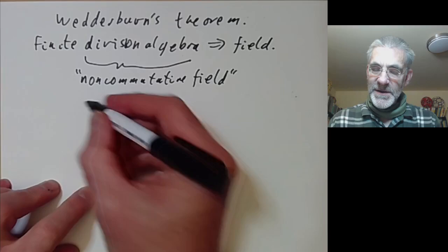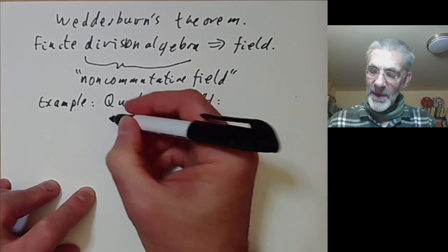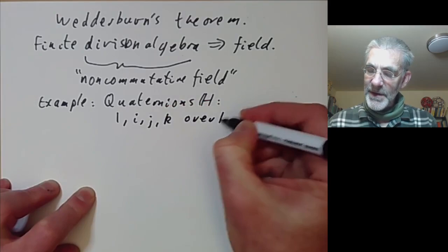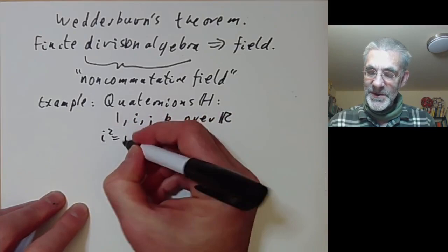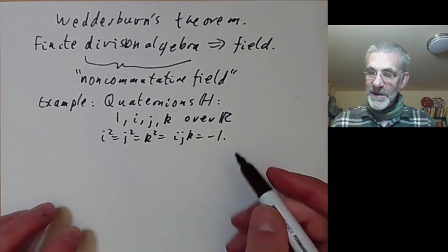So the standard example that everybody knows is just the Quaternions H, which have a basis of 1, i, j, k over the real numbers, and the multiplication is given by i squared equals j squared equals k squared equals ijk equals minus 1, as Hamilton famously wrote down on a bridge.